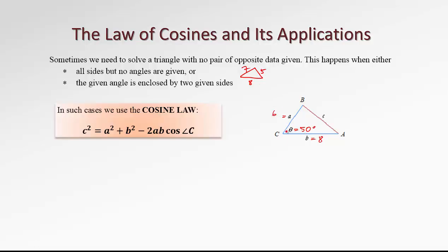Therefore, we need another tool for solving such triangles. And here it is — the cosine law. Using the cosine law, we can find the side C that is opposite to angle 50. The formula is: C squared equals A squared plus B squared — so this side squared equals the sum of squares of the two given sides — minus double the product of A and B times cosine of the enclosed angle C.